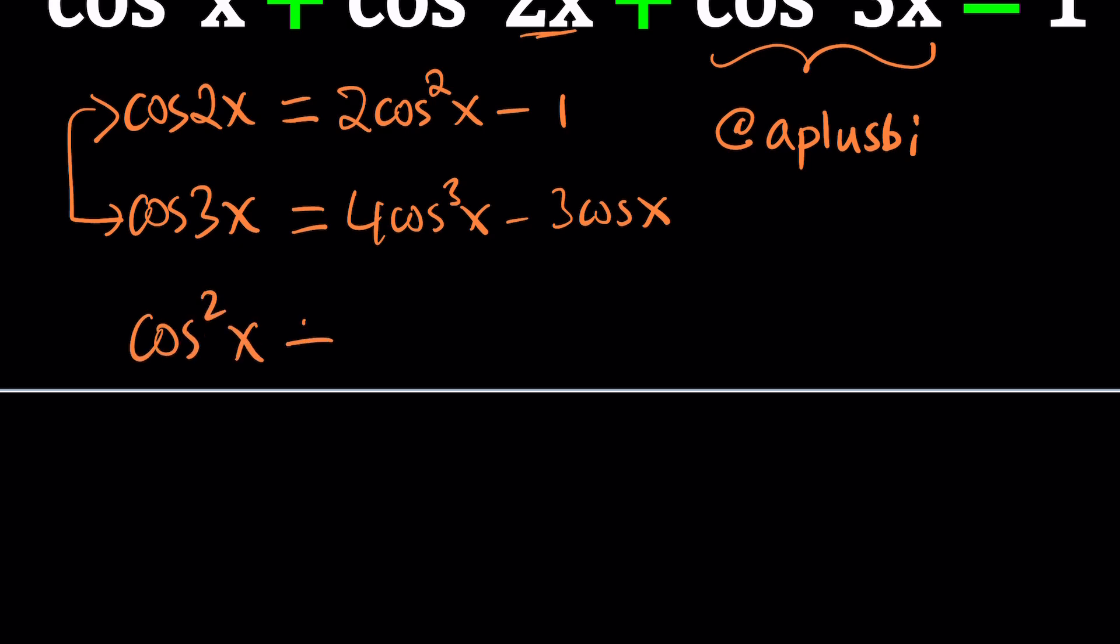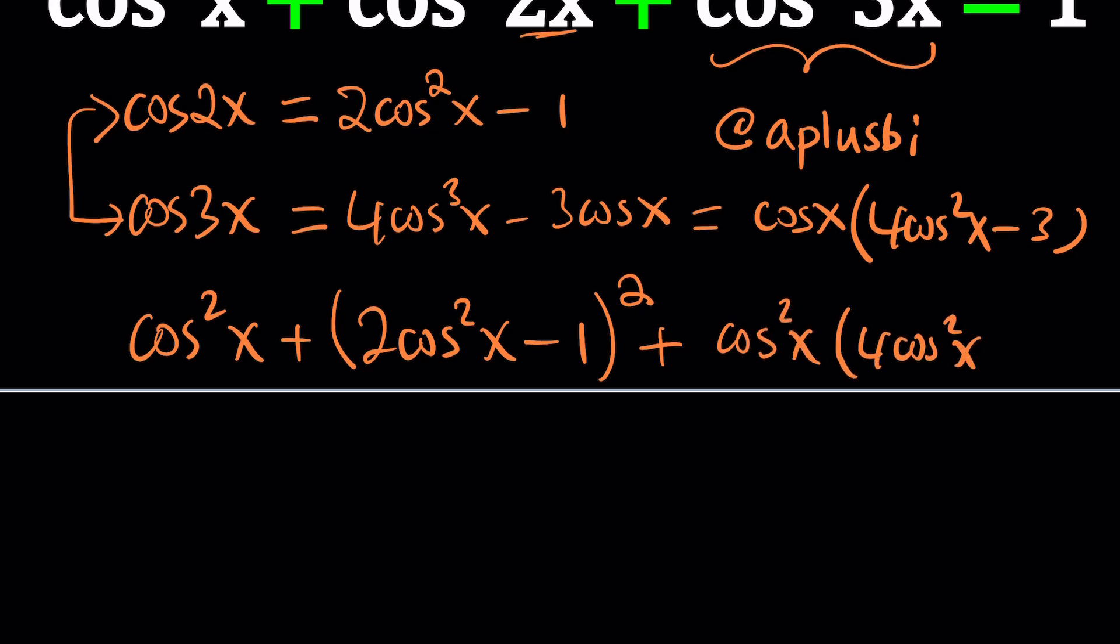Let's see how we can use these two things in our equation. Obviously cosine squared x is going to stay the same, but we need to replace cosine 2x with 2 cosine squared x minus 1, and then square that. And then cosine of 3x, we can factor out a cosine of x and inside we have cosine squared x minus 3. So cosine of 3x is divisible by cosine x, which is really cool. When you square it, you're going to get this squared and this squared because it's a product. At the end it equals 1.